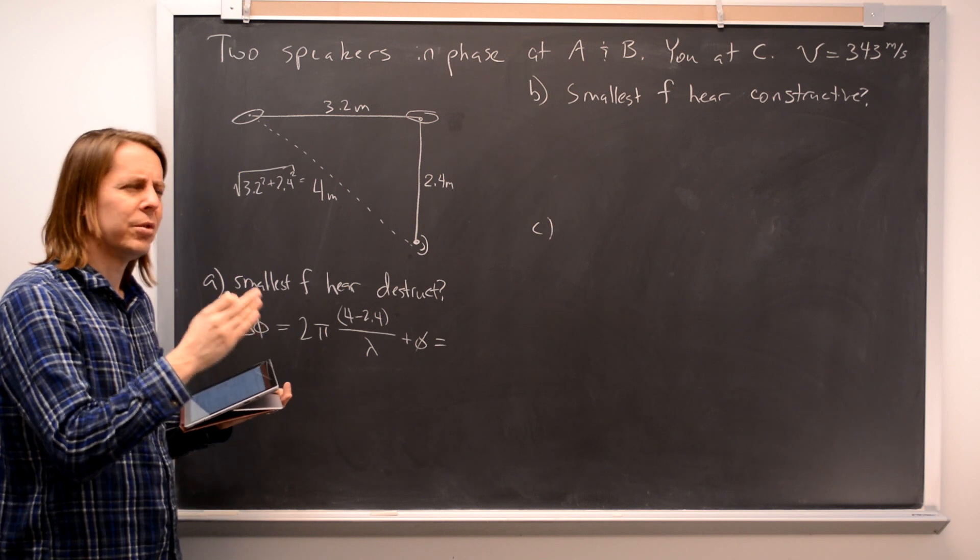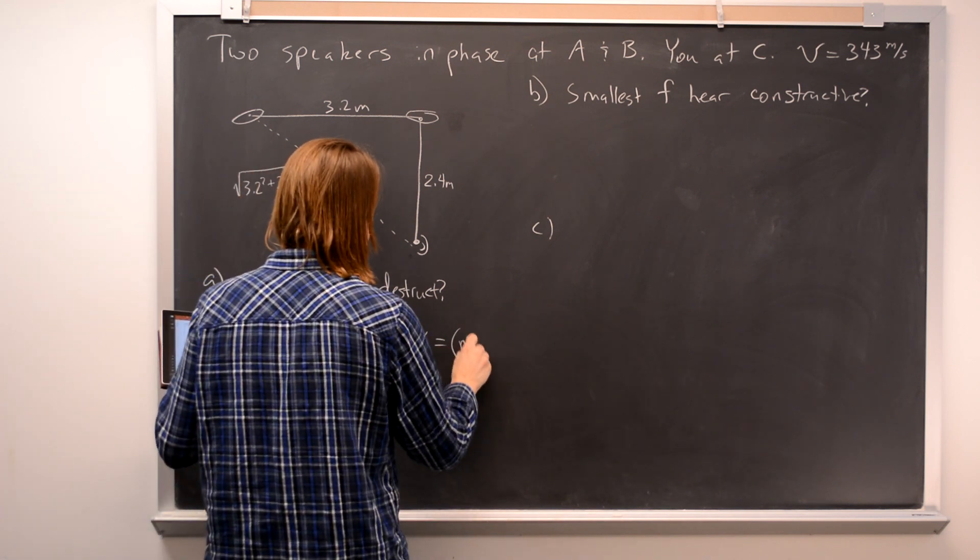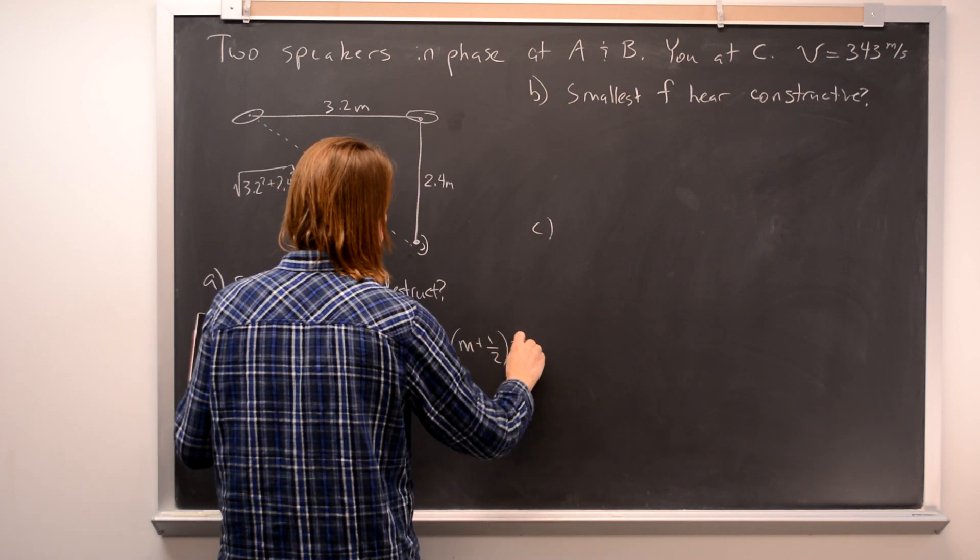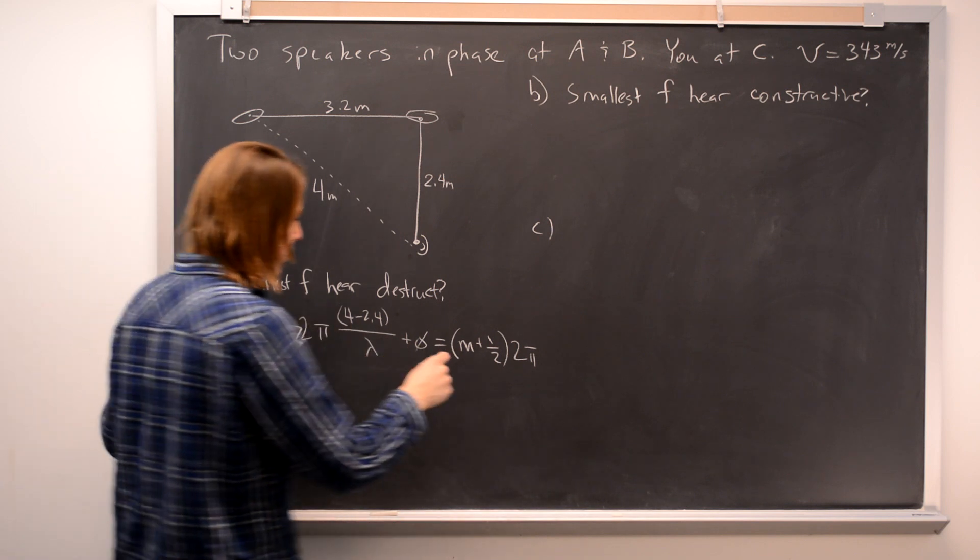So you could think of doing this with the 1, 3, 5 odd integers. The way it's usually written is an easier way here. M plus 1/2 times 2π for M equals 0, 1, 2, et cetera.